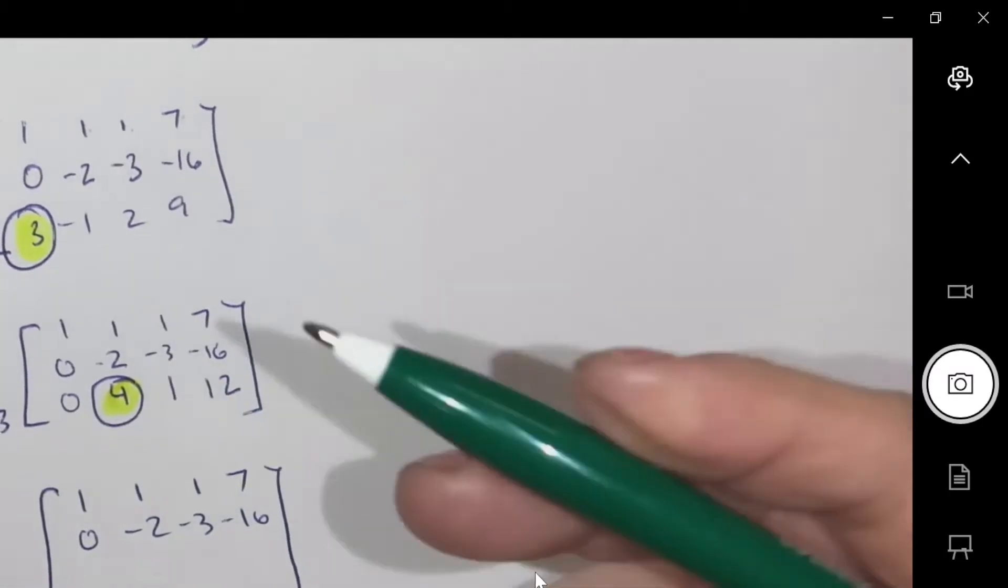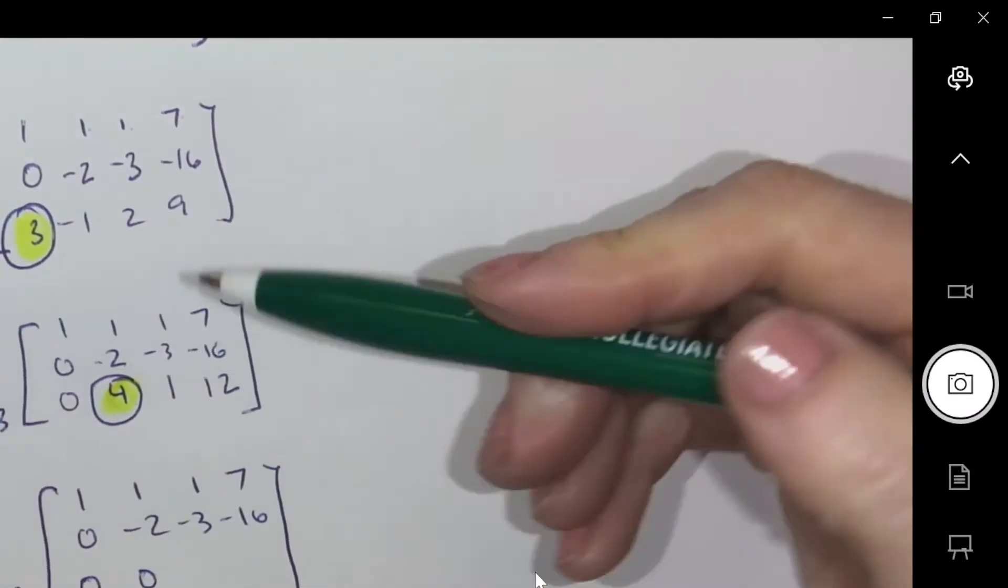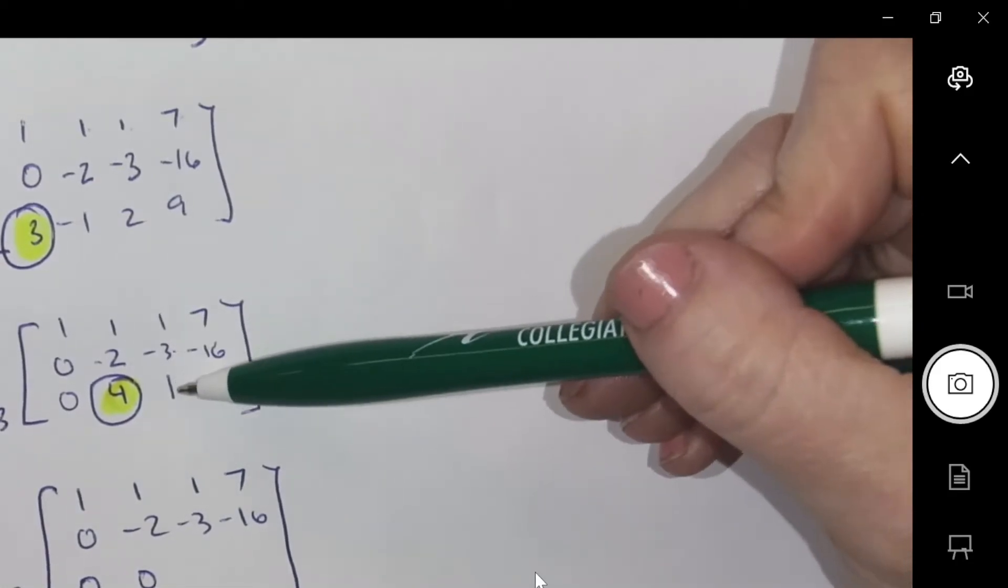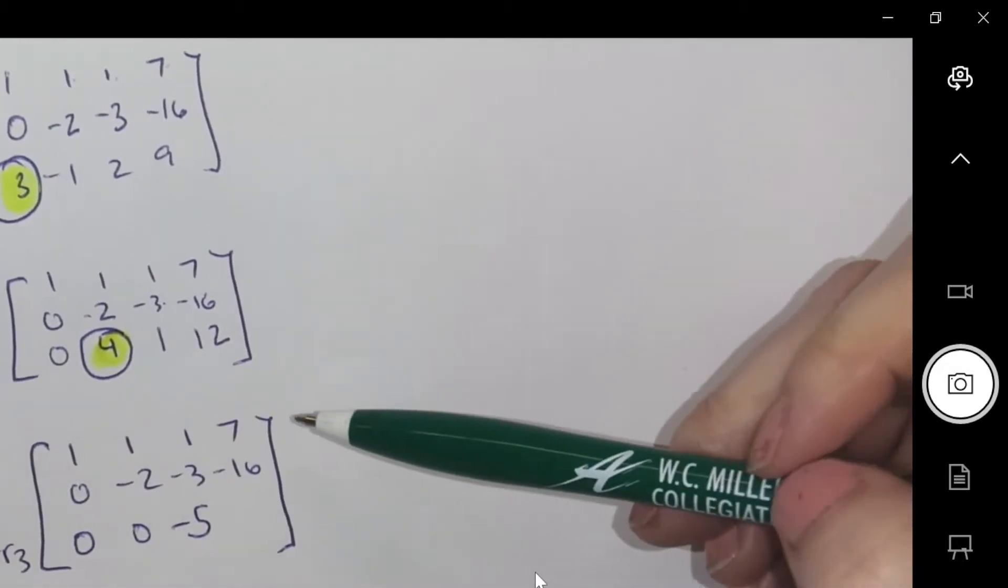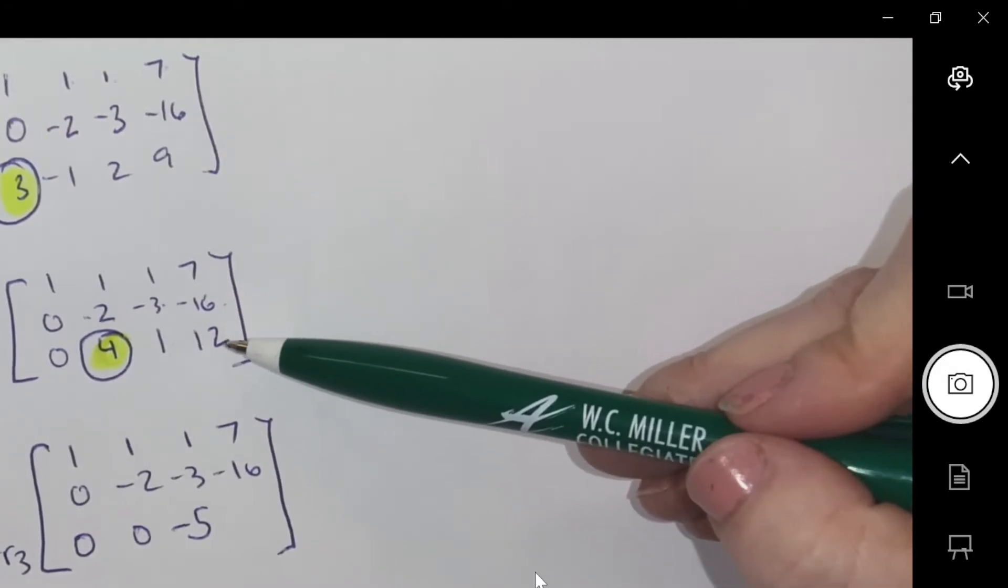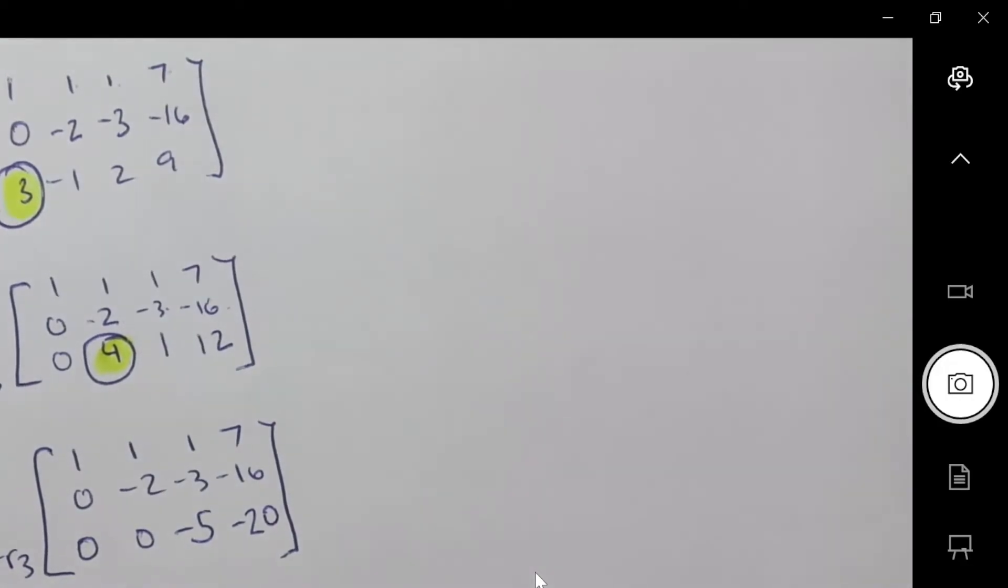So we're going to go with row two. So we're going to go, what? Two row twos plus a row three. See where I'm getting all that strategy from? I just need to think, how can I get a zero? So two of these plus that. So zero, zero. Okay. Negative six plus one is negative five. Two of these is negative 32 plus 12. So negative 20. So this was where you stopped yesterday.